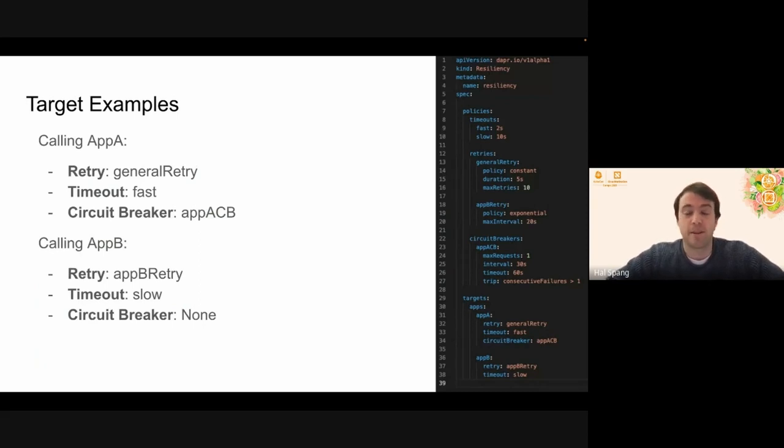So finally, let's do some target examples just to make sure everything is syncing appropriately. So I have a really simple policy defined here. We define a few timeouts. We have fast at two seconds and slow at 10 seconds. We have a general retry, which is a constant policy with a duration of five seconds between requests and a maximum of 10 retries. We have an app B retry, which is exponential and has a max interval of 20 seconds. So you notice it doesn't actually have anything else set, including maximum retries. When you don't set the maximum retries, we're actually going to be trying to do essentially infinite retries. So maybe app B, we don't care how long it takes. We just want that thing to succeed eventually. We also define a circuit breaker, app ACB or app A's circuit breaker. And then we have just our two targets down here, app A and app B.